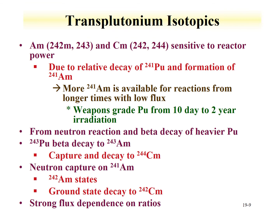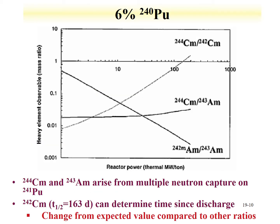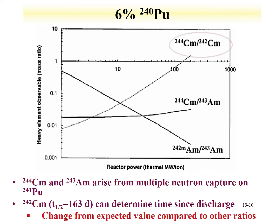The transplutonium isotopes can also provide information. An example of these isotopic ratios is shown here: if one looks at the americium isotopic ratios for a sample with 6% plutonium-240, this ratio decreases as the thermal power increases—going from 1 to 10 to 100 to 1,000 thermal megawatts per ton of reactor power. Measuring this isotopic ratio of the americium isotopes provides a route for determining the reactor thermal power, which tells us information about the reactor origin for the production of the material.